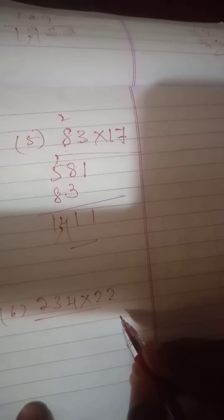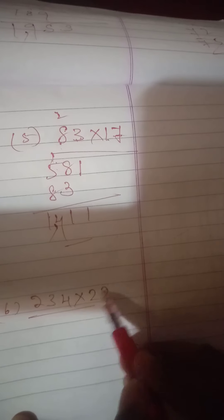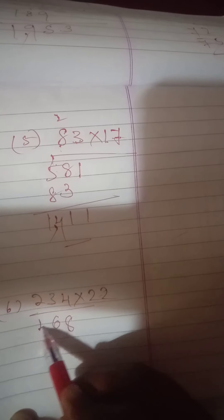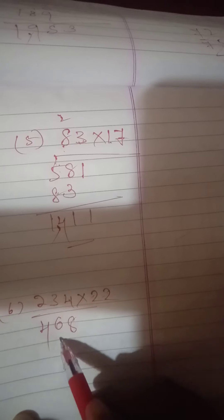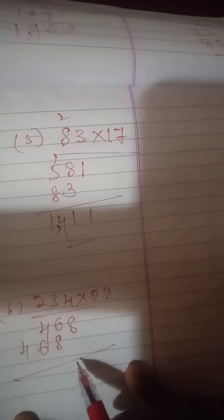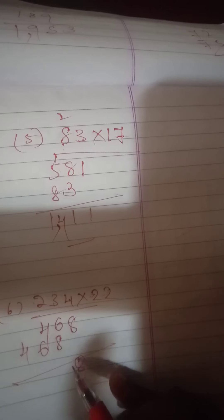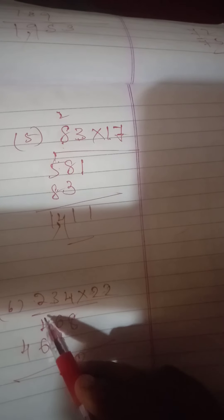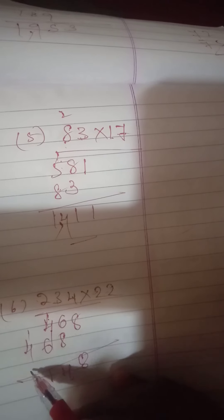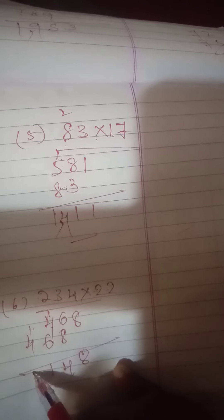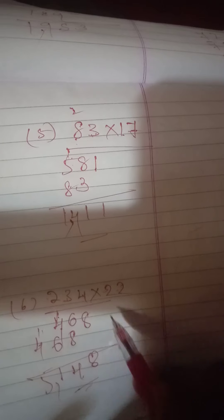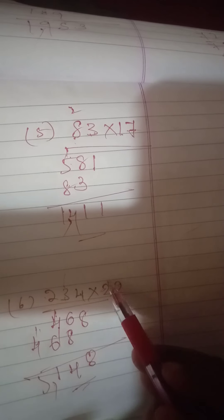Next question: 234 into 22. 2 fours are 8; 2 threes are 6; 2 twos are 4. Next: 2 fours are 8; 2 threes are 6; 8 plus 6 is 14, carry 1; 6 plus 4 is 10, 10 plus 1 is 11, carry 1; 4 plus 1 is 5. Answer is 5148. Multiplicand, multiplier, and product identified.